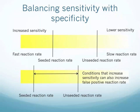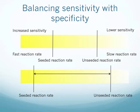What you're trying to do by varying each one of these conditions is essentially balancing sensitivity with specificity. On this slide I'm depicting how each factor affects the assay — on the left-hand side there's increased sensitivity, corresponding with faster reaction rates, and on the right lower sensitivity corresponds with slower reaction rates. What we would like is to have the unseeded reaction rate be near zero and the seeded reaction rate be as fast as possible. But typically reaction conditions that increase the seeded reaction rate will also increase the unseeded reaction rate. Ideally we want a reaction condition that both increases the seeded reaction rate and decreases the unseeded reaction rate.